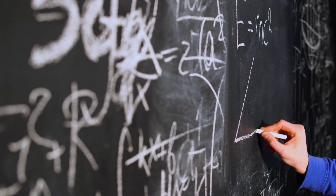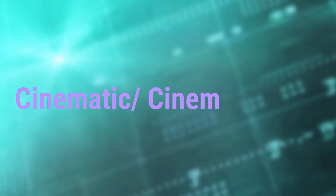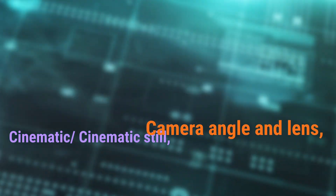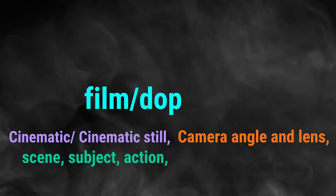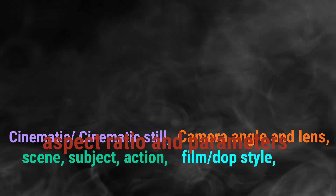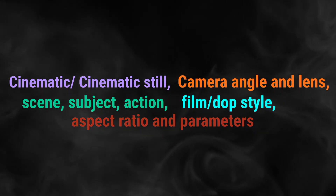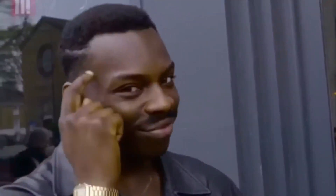The prompt formula which works for me in 99% of cases is as follows. We type into Midjourney: a cinematic or cinematic still, a camera angle and lens, the scene, subject and action, the film or DOP style, and the aspect ratio, as well as crucial parameters to create a cinematic look. No worries — I will break those down for you quickly.